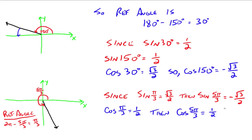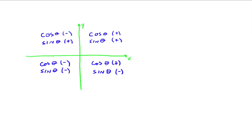That goes back to the very first thing: whatever quadrant you're in, the value of sine or cosine will be positive or negative accordingly. All right, that's it. Study well, and please let me know if you have any questions.